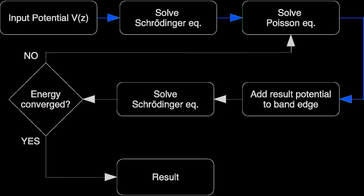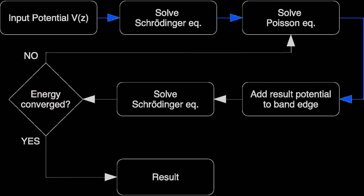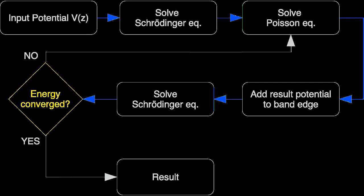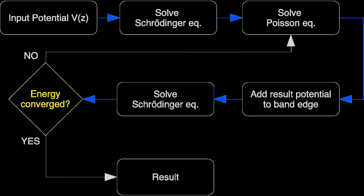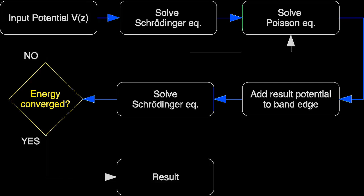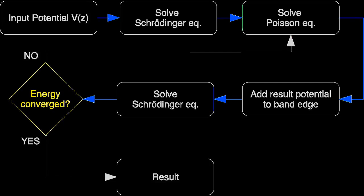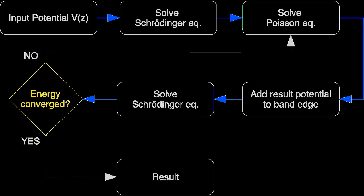Once that solution is known, we find out, based on the resulting wavefunction, what the distribution of electrical charges is throughout the entire structure. That distribution, in turn, creates its own electrical potential, which is found by solving the Poisson equation. We then add the resulting potential to the initial quantum well potential and repeat the calculations to find new solutions of the Schrödinger equation. That process runs in a loop until self-consistent convergence is reached, controlled either by imposing a maximum number of allowed loops or by setting a limit on the energy convergence value.